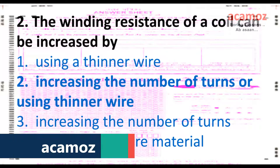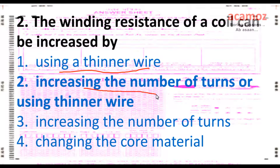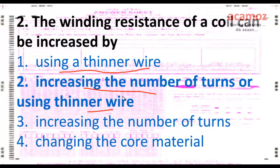The winding resistance of a coil can be increased by: using a thinner wire, increasing the number of turns, or changing the core material. We can increase the resistance by using thinner wire as well as increasing the number of turns. Option two, which includes both — increasing the number of turns or using thinner wire — is the correct answer.